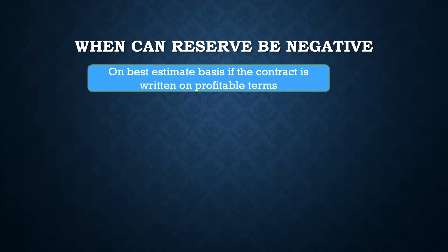But if the reserve is calculated on a best estimate basis, while the contract is written on profitable terms — which obviously it should be — that would mean the expected present value of benefit and expense would be less than the expected present value of premium. If the contract is not written on profitable terms, there has to be some reason, maybe the company is trying to capture market share. So if the expected present value of benefit and expense is less than expected present value of premium, then the reserve would be negative, because the prospective formula for reserve is: expected present value of benefit + expected present value of expense − expected present value of premium. In this case, the expected present value of premium is larger, making reserve negative.